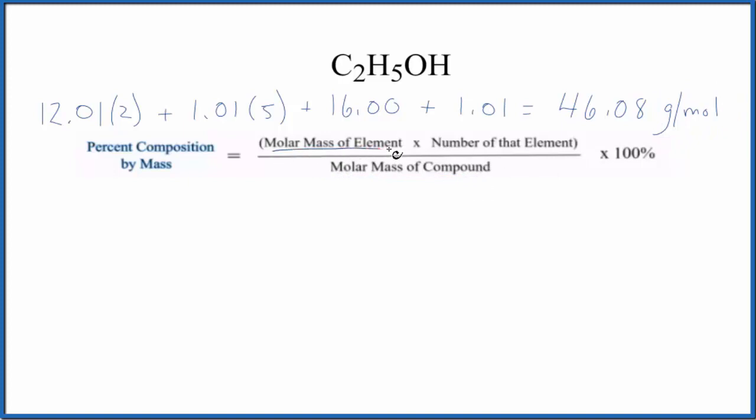Now we'll work with each element. Let's do carbon first. So we have carbon on the periodic table, 12.01, the units grams per mole. That's our molar mass for the element. And then the number of that element, that's the 2 here. I'm going to multiply this by 2.